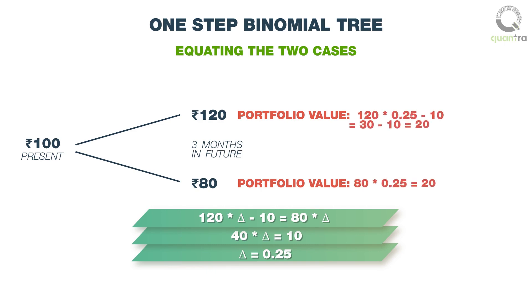You can substitute this value of delta in both cases and see that the value of our portfolio remains 20 rupees after three months in either outcome.